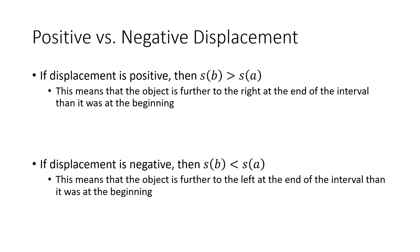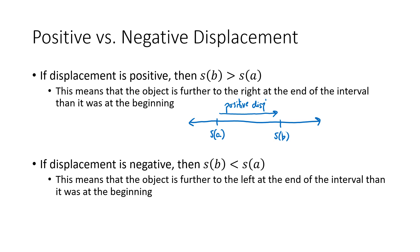If displacement is positive, the ending position is further in the positive direction than the beginning — the object ended up further to the right overall, even if it zigged back and forth. If displacement is negative, s(b) is less than s(a), meaning the object started further to the right and ended up further to the left — that's negative displacement.